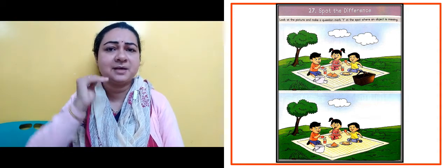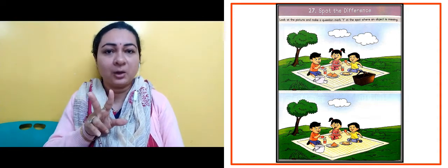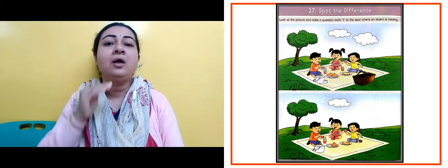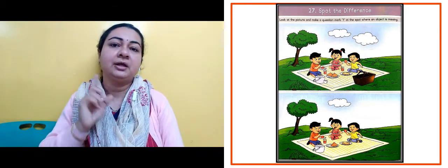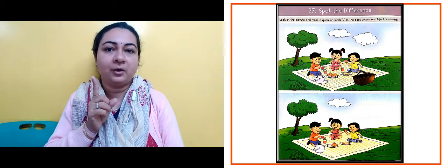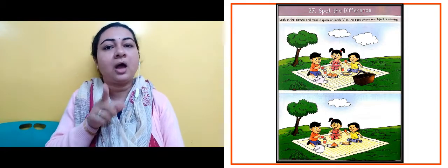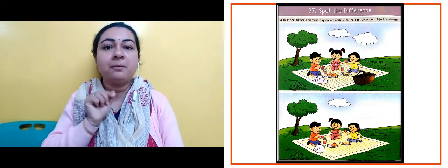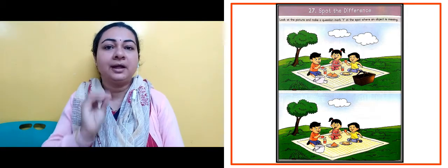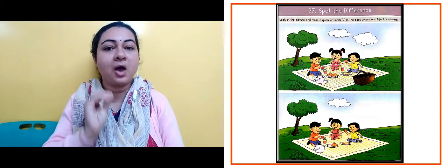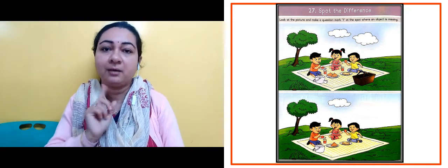For example, in the first picture there are two clouds, but if you see the next picture, only one cloud is there. So you can see one cloud is missing. In all, there are a total of five differences. You can spot them in the next picture and mark the question mark.